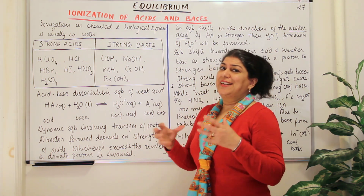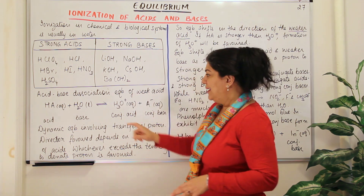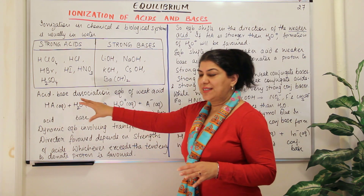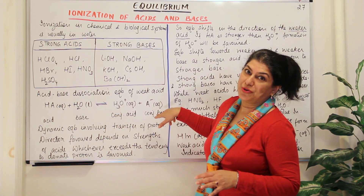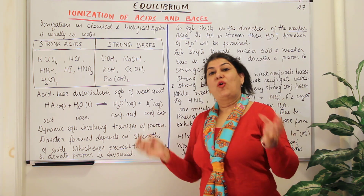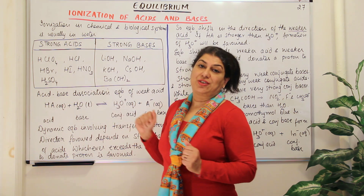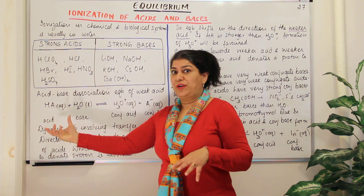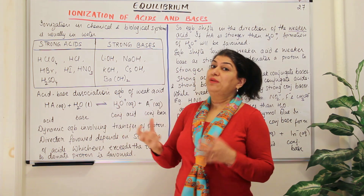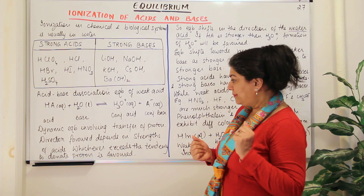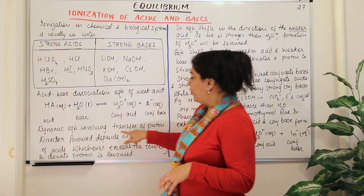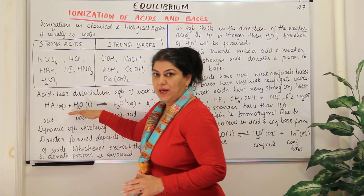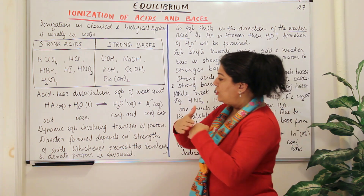Now if you look at the dynamic equilibrium — what is actually taking place? From the reactant to the product side, the proton is moving from the acid to the base. And in the reverse side, the proton is moving from the conjugate acid to the conjugate base. So it is basically the movement of proton in opposite directions that decides the direction of the reaction. So the question is: when equilibrium is established, how much reactant and product would be there, and which side of the reaction will be favored? The dynamic equilibrium simply involves the transfer of a proton on both sides in opposite directions.